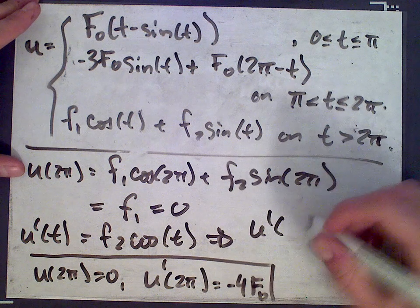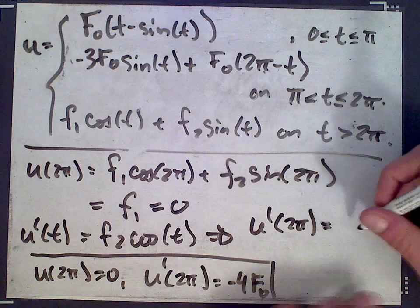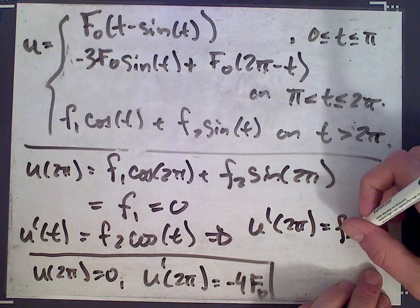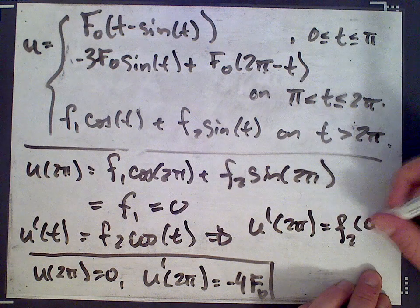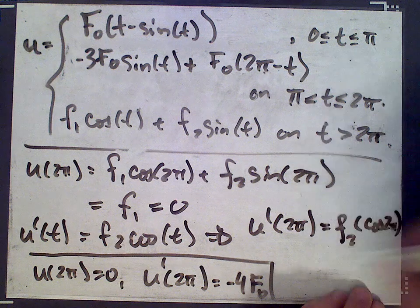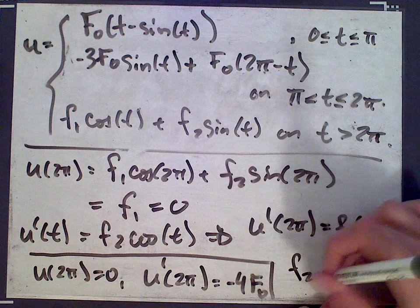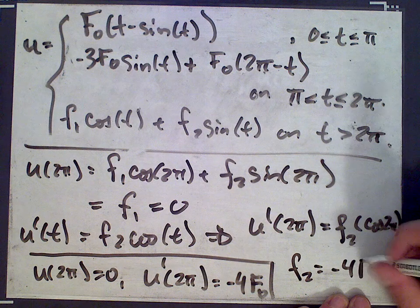So u prime of 2π, according to this, should be f2 cos of 2π, which is 1. So we get, from here, f2 equals negative 4 f0.